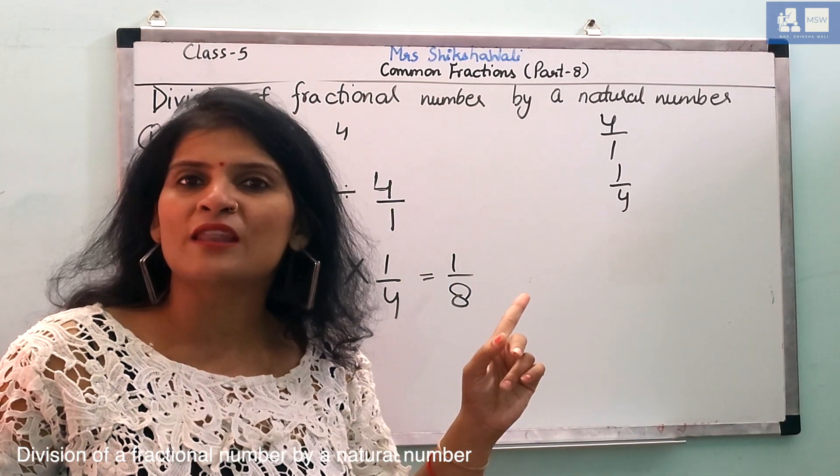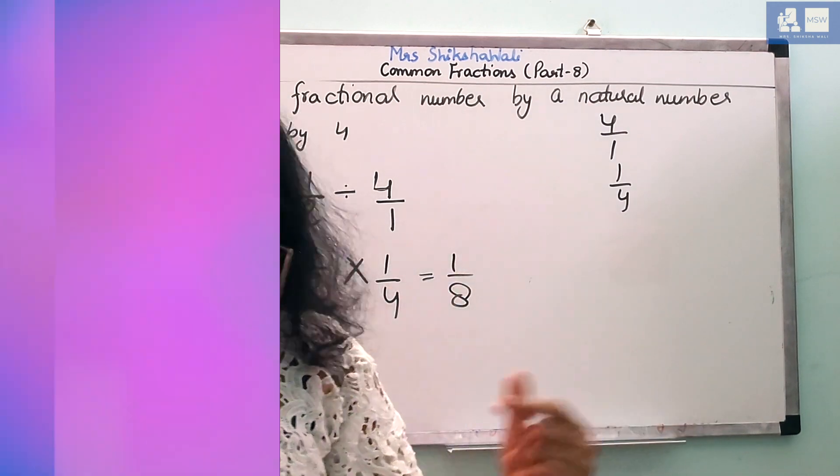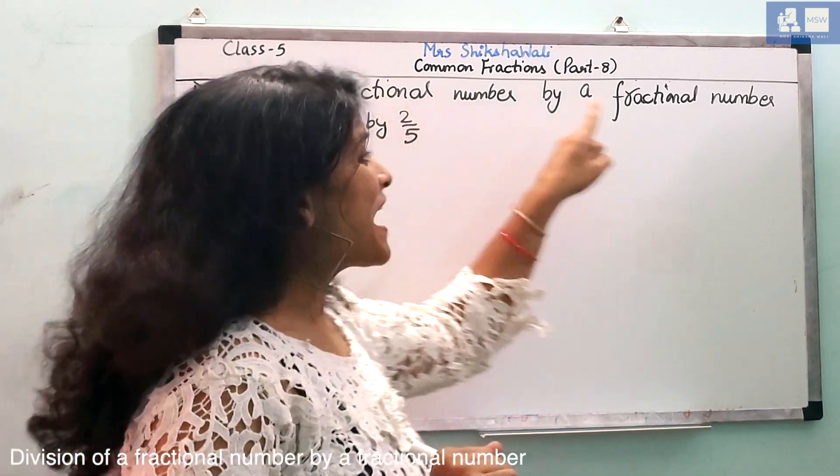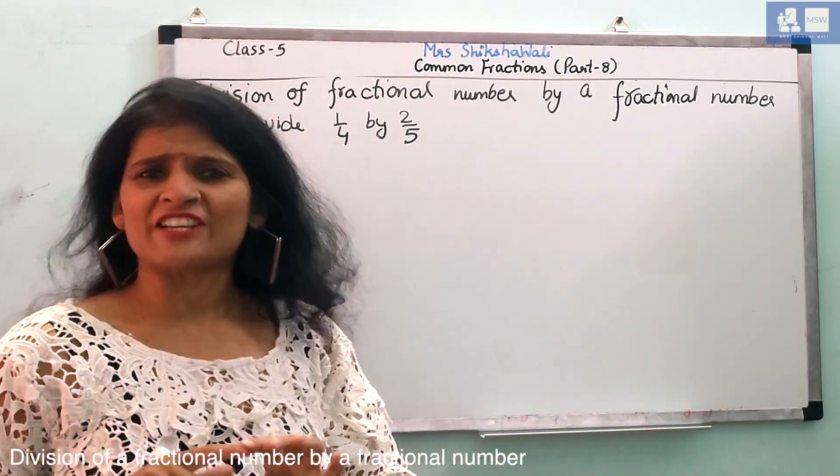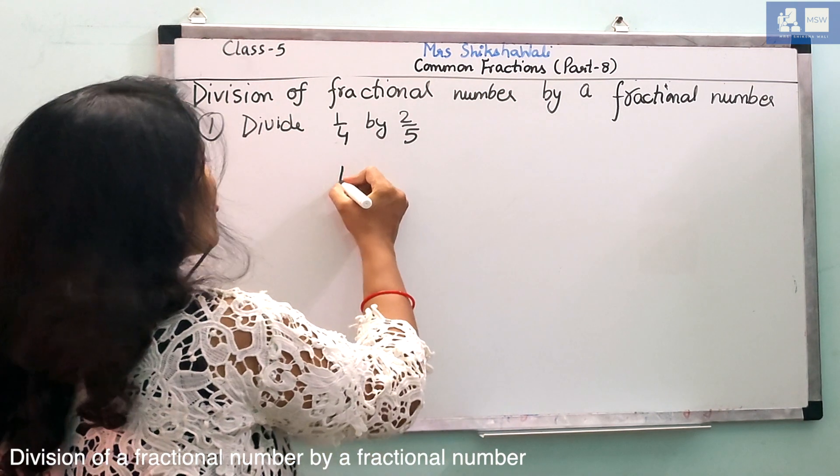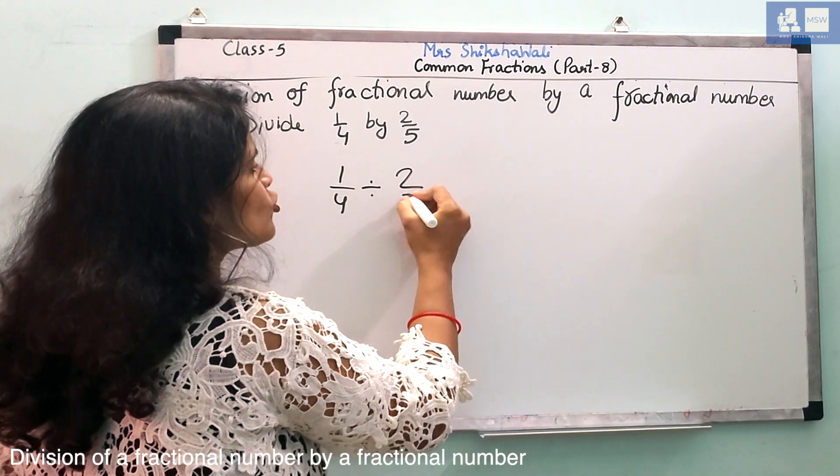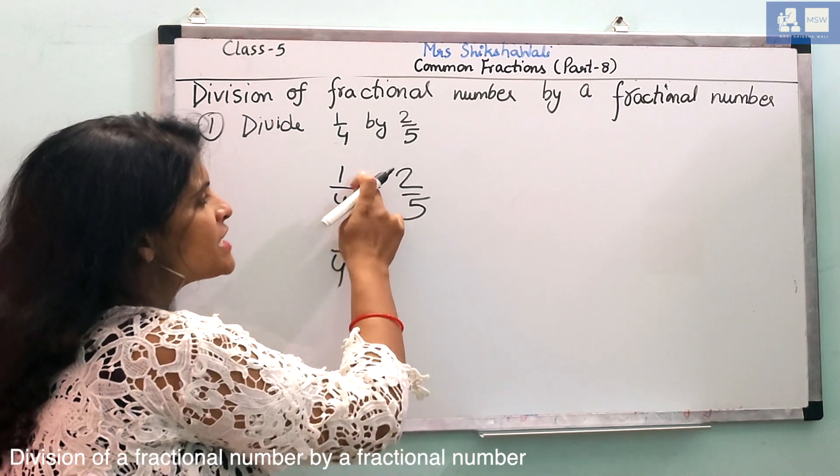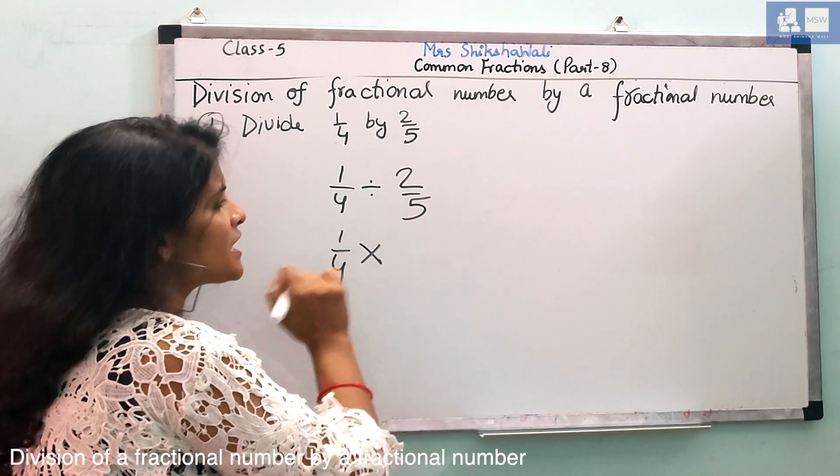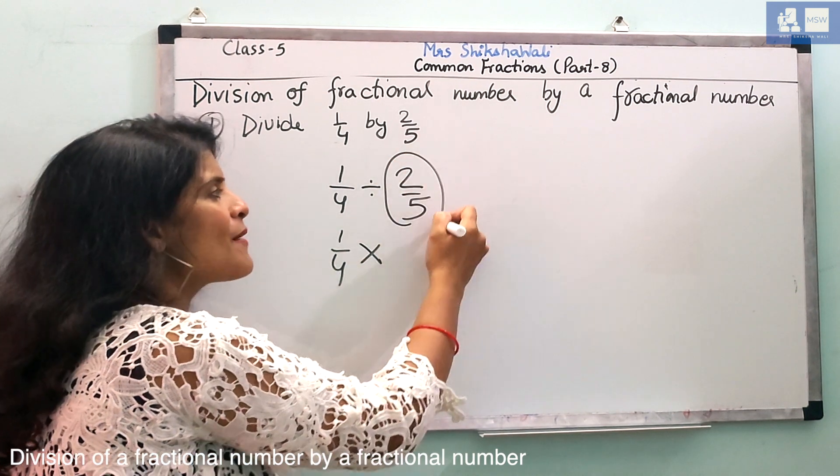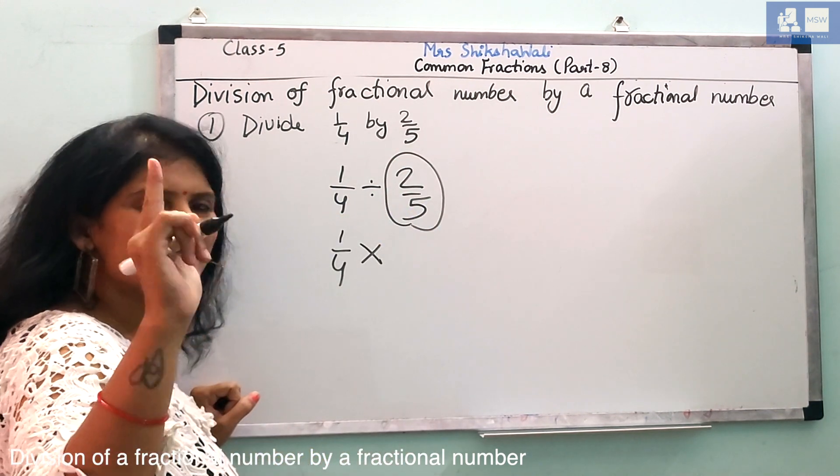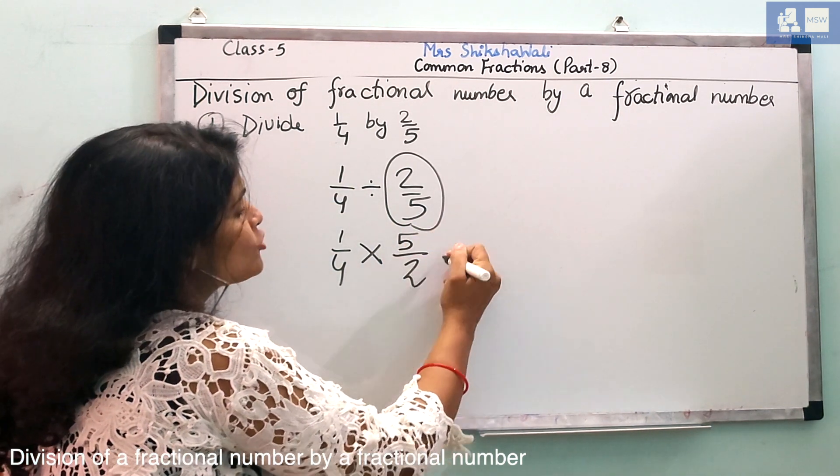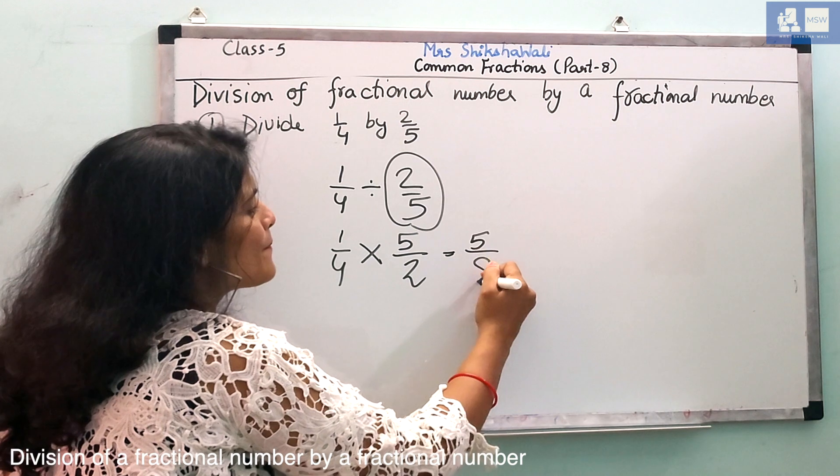Next, see division of fractional number by a fractional number. Division of a fractional number by a fractional number. Two numbers are fractional number. 1 by 4 divided by 2 by 5. This number as it is. This is our division sign. So, this is our division sign, multiplicative inverse. Meaning, 2 by 5 reciprocal will be 5 by 2. This answer is 5 by 8.